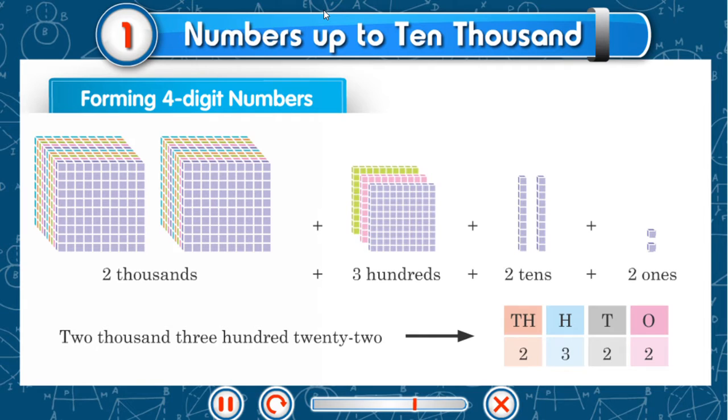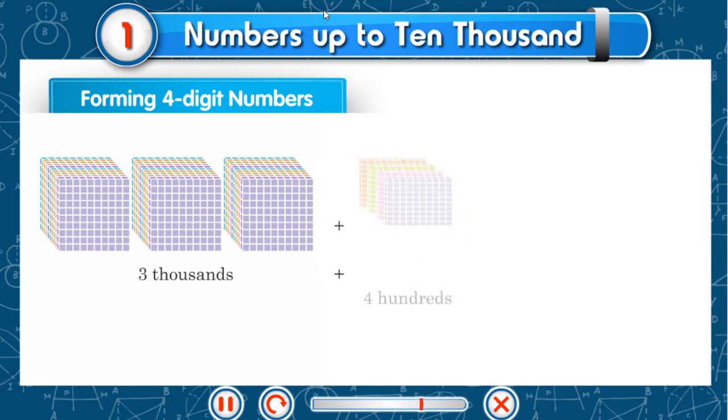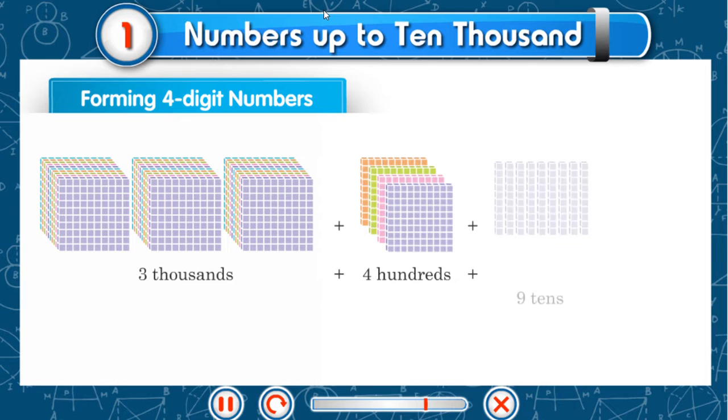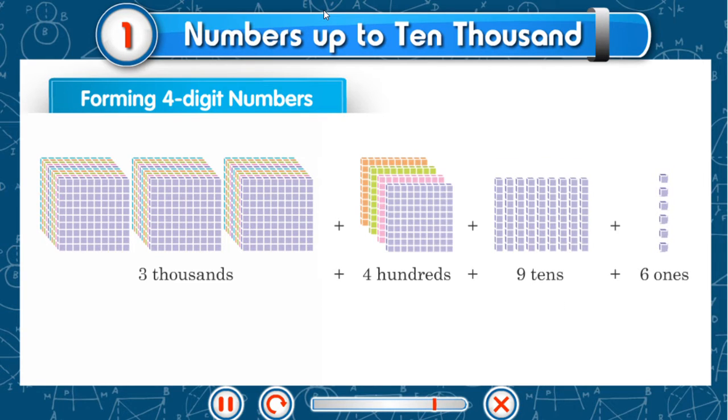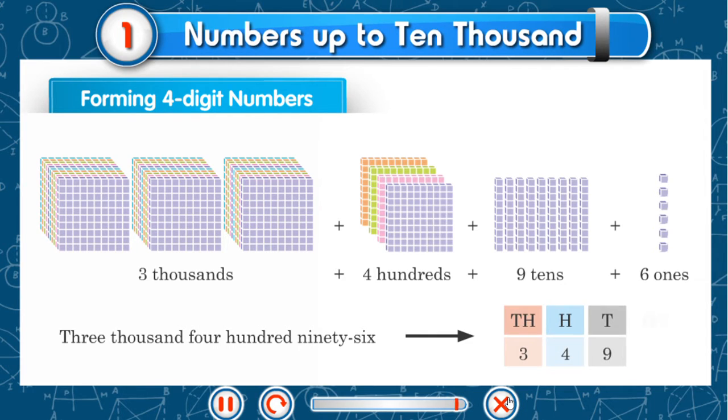3,000 plus 4 hundreds plus 9 tens plus 6 ones: 3,496. Th 3, H 4, T 9, O 6.